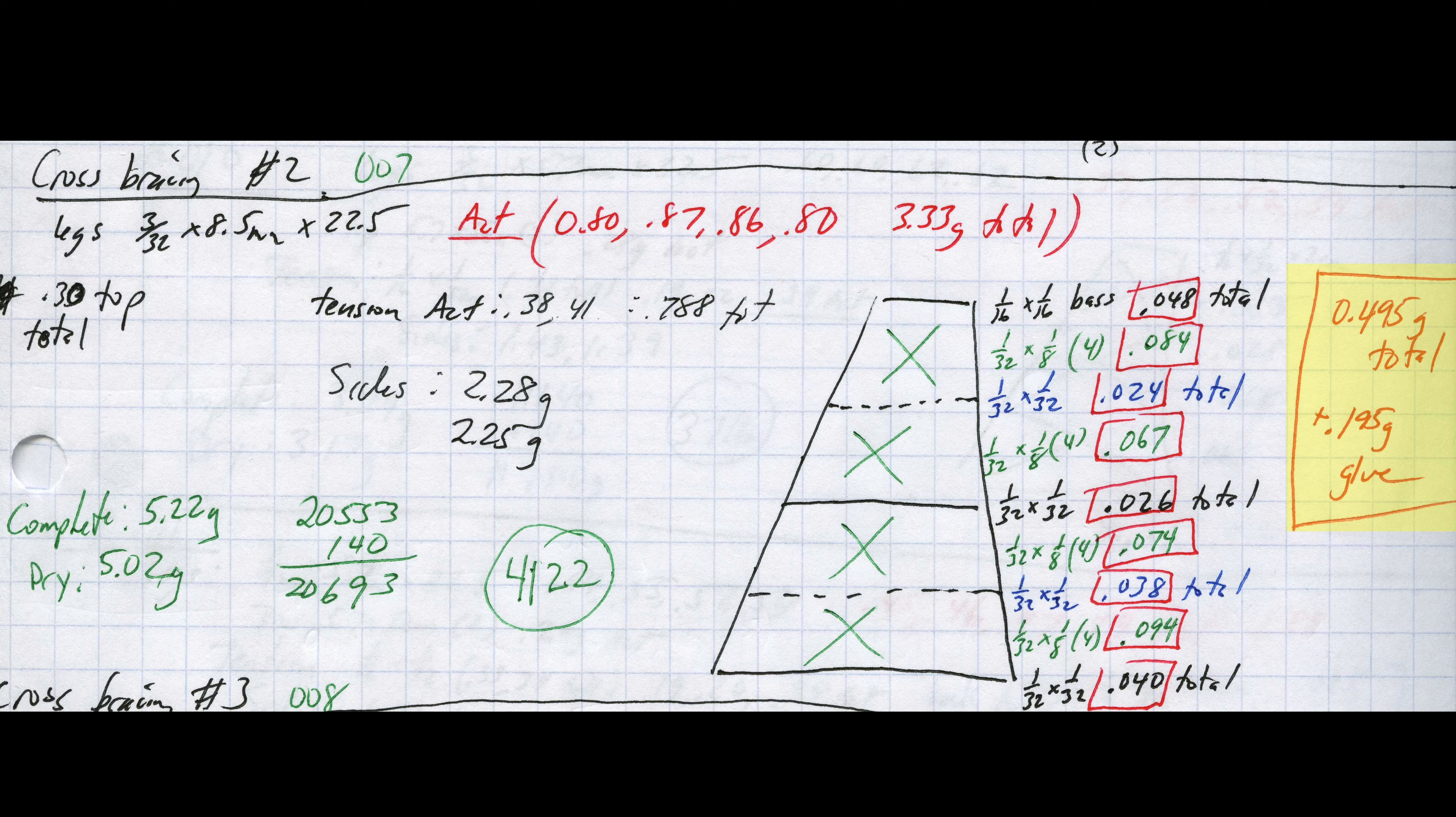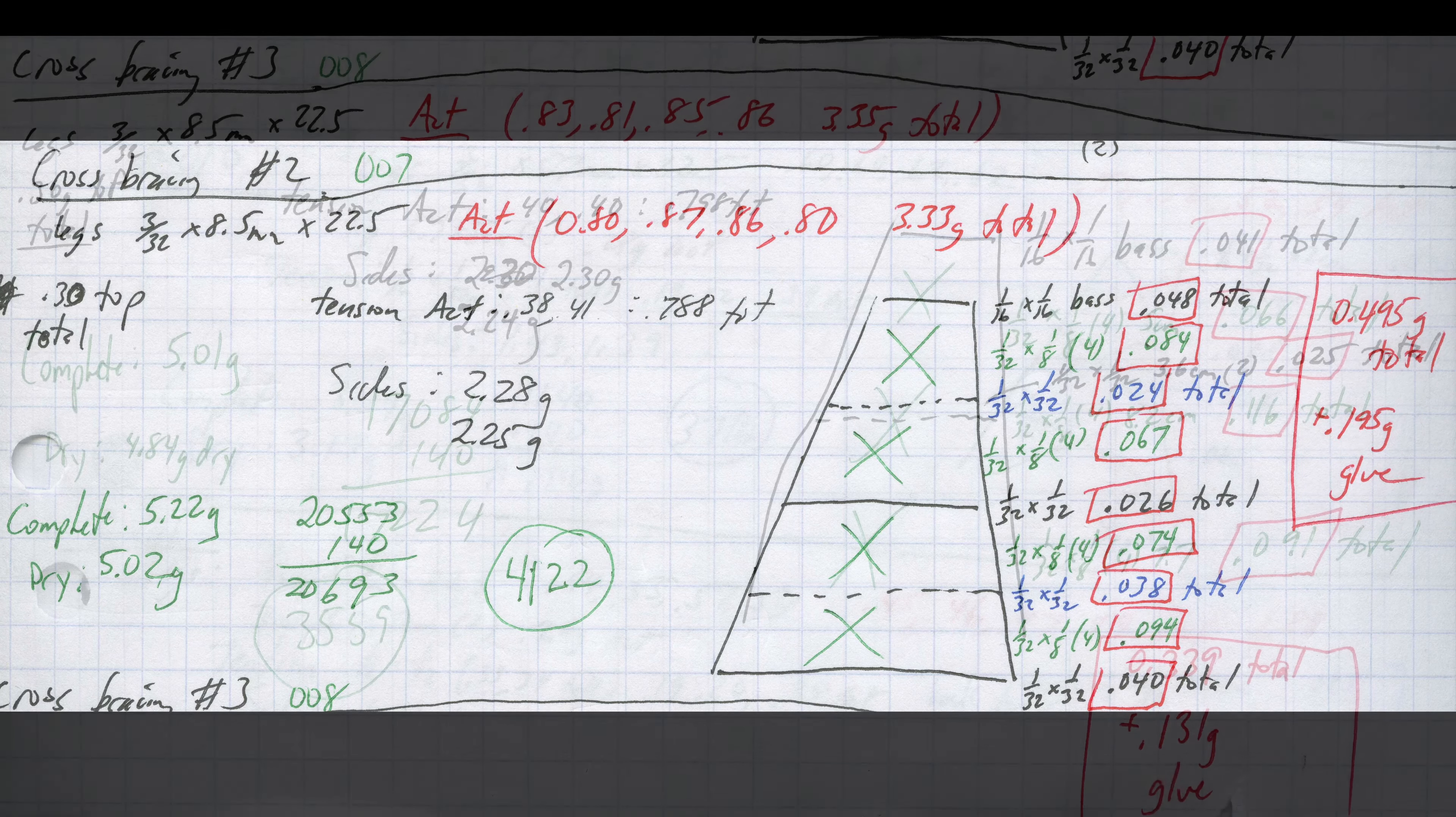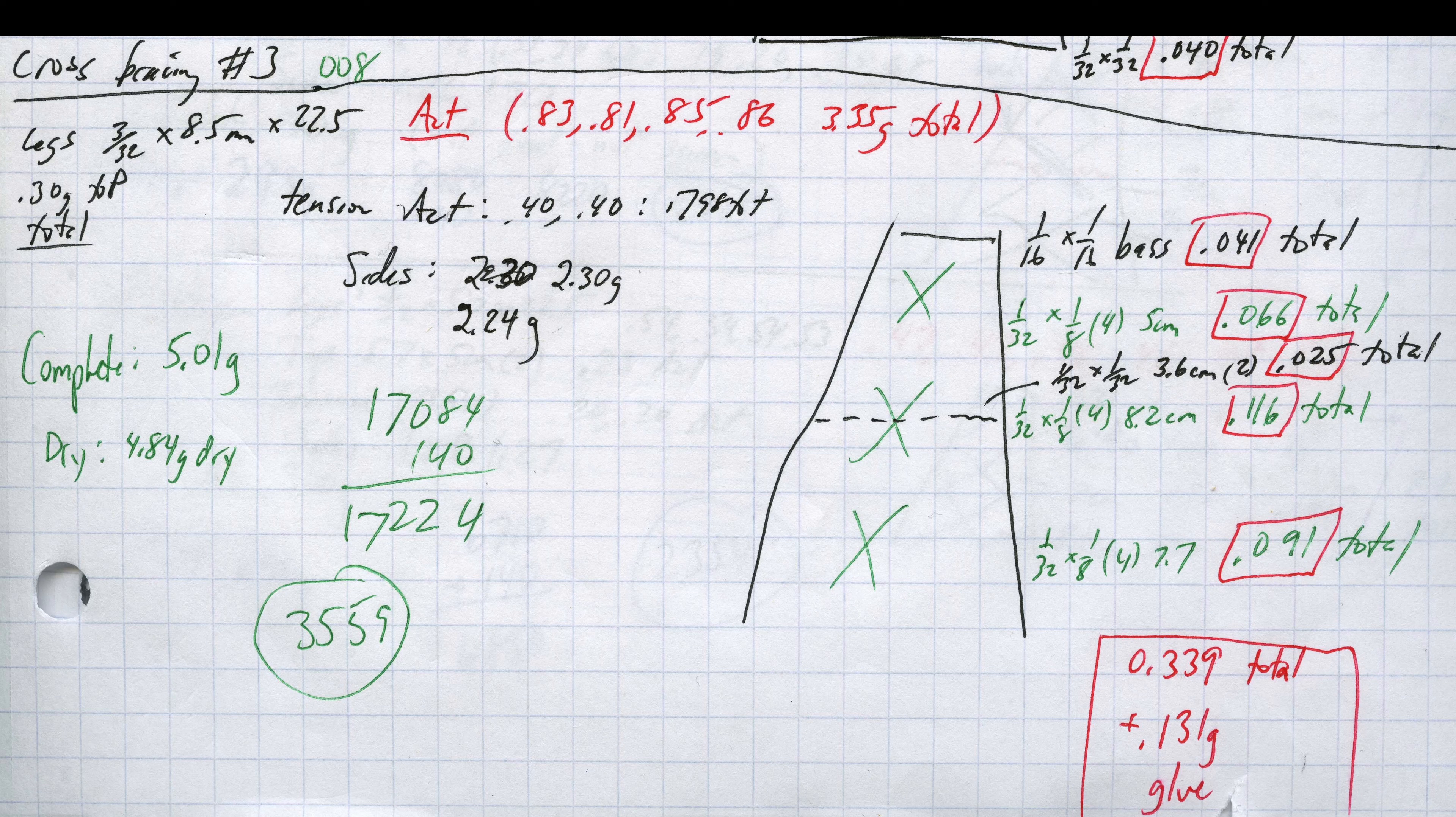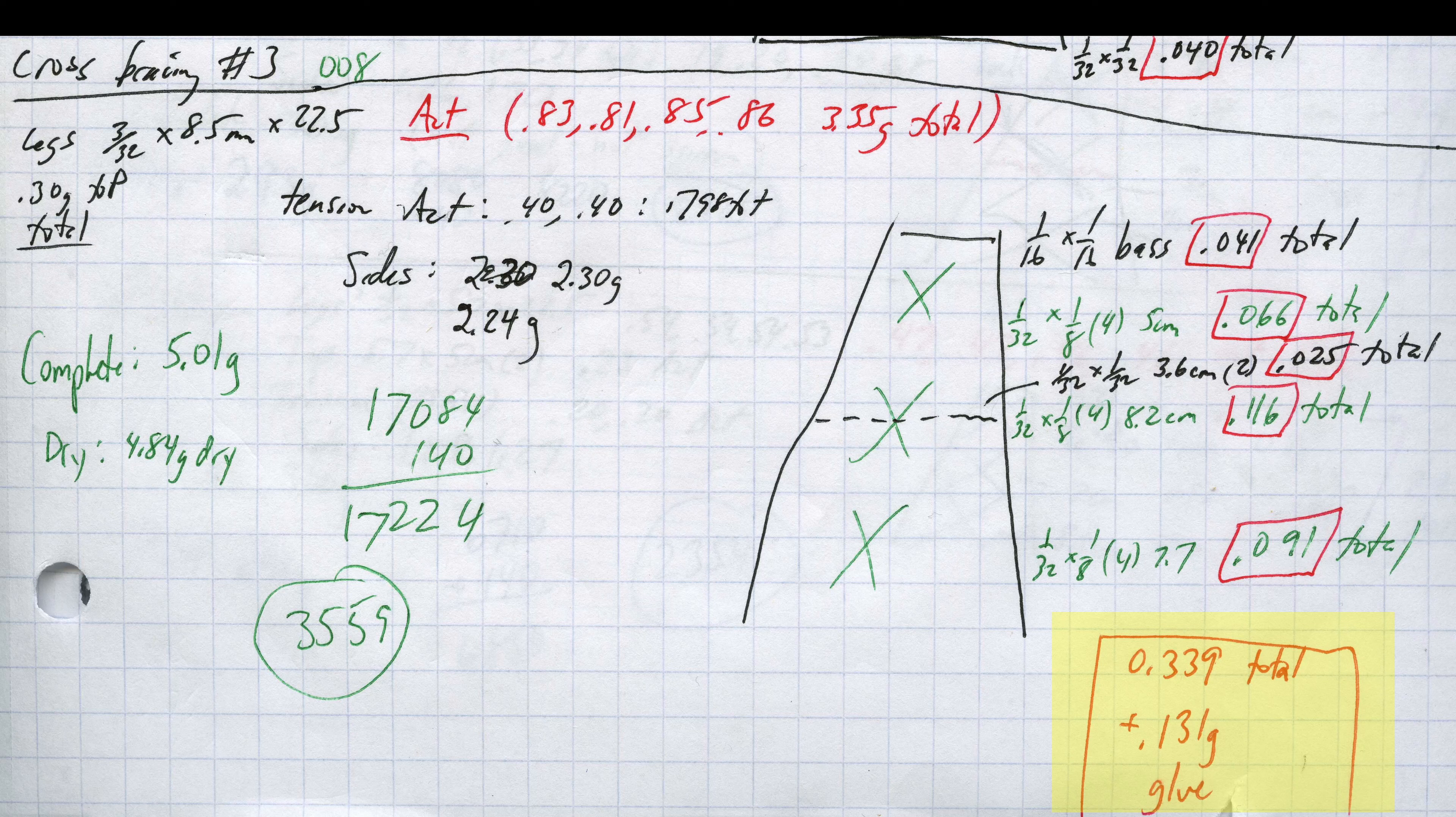The amount of glue is nearly identical as it uses the same number of joints. And finally, the third build used a slightly simplified design for the cross bracing and was able to save another 0.16 grams of material and now used about 0.07 grams less glue because it had fewer joints.